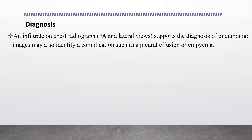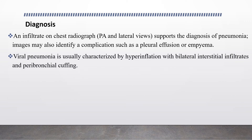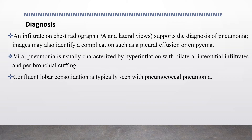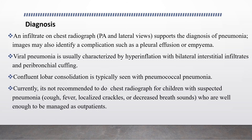Regarding diagnosis, an infiltrate on chest radiograph — PA or lateral view — supports the diagnosis of pneumonia, and imaging might also identify complications such as pleural effusion or empyema. Viral pneumonia is usually characterized by hyperinflation with bilateral interstitial infiltrates and peribronchial cuffing, while confluent lobar consolidation is typically seen with pneumococcal pneumonia. Chest radiograph is currently not recommended for children with suspected pneumonia who are well enough to be managed as outpatients; we do chest X-ray if the patient requires admission or is not improving to treatment appropriately.